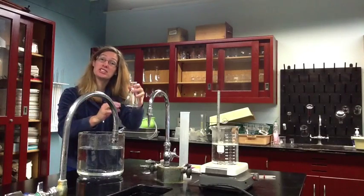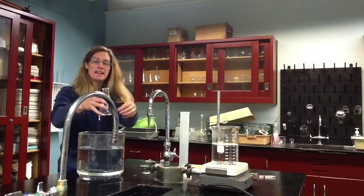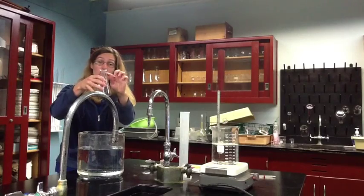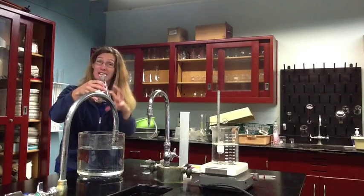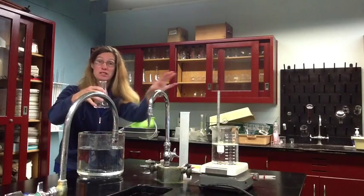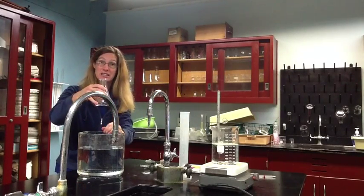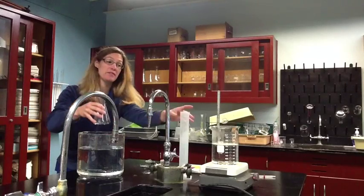Pour it into the graduated cylinder, take your measurement, and then you're going to need to fill up this whole flask with water up to the line that you drew at the beginning. That's how much air you had in the flask at the beginning of the experiment when the air was hot. So you'll need to take that measurement.